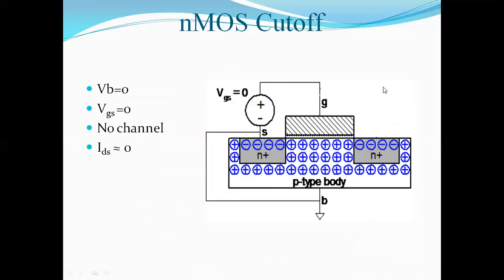Now we will see the operation of the MOSFET, starting with the cutoff region. Different batteries are applied to the MOSFET terminals. Initially we apply the gate-to-source voltage VGS equal to zero. The body terminal of the N-MOSFET is connected to zero or the highest negative potential. Because of this, no physical channel is present between the two N-type semiconducting materials, so there is no flow of electrons or charge carriers and the current is zero. This is the cutoff mode: VGS = 0, no channel, ID = 0.